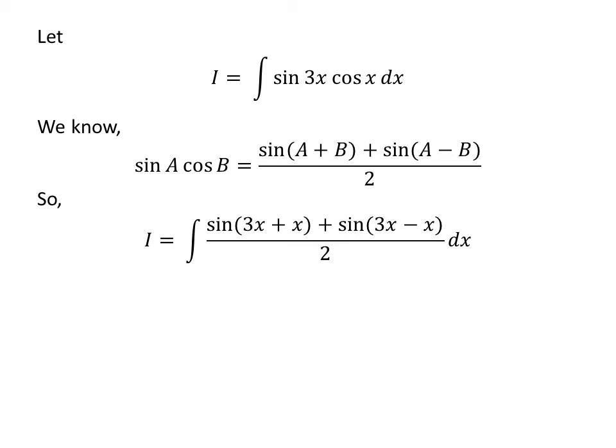So i is equal to the integral of sine of 3 times x plus x, plus sine of 3 times x minus x, upon 2, with respect to x. Thus, i is equal to the integral of sine of 4 times x plus sine of 2 times x, upon 2, with respect to x.